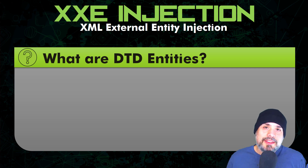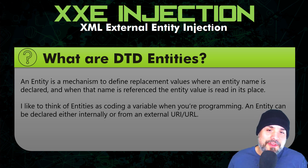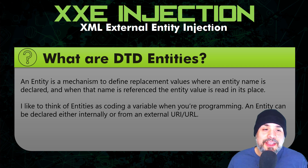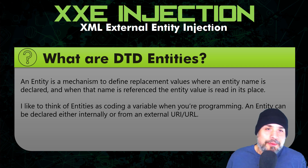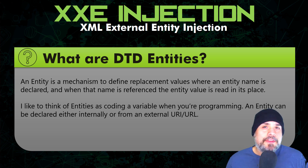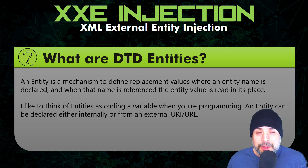Now we're going to start talking about DTD entities, and this is where we start getting into how we can inject with XML. An entity is a mechanism to define replacement values where an entity name is declared, and when that name is referenced, the entity value is read in its place. I like to think of entities as like coding variables — for example, you might declare a variable as name and give it the value of Bob. An entity can be declared either internally or externally from a URI or URL.